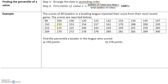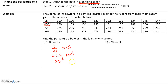Let's take a look at 150 points. We count the number of values less than 150, which gives us 10. The number of values less than X is 10, and the total number of values is 40 bowlers. So we multiply 10 over 40 by 100%, which equals 0.25 times 100%, giving us 25%. So 150 is in the 25th percentile, meaning a bowler who scored 150 scored better than 25% of the other bowlers.